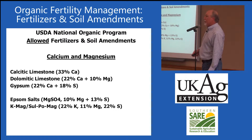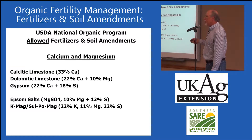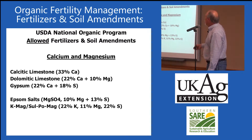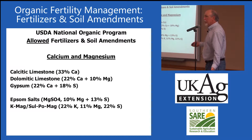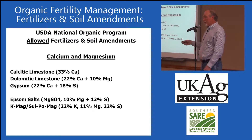For calcium and magnesium, you have a lot of tools that are allowed. You can use calcitic limestone, dolomitic limestone, and gypsum — if it's a mined source, not the wallboard kind. Epsom salts and magnesium sulfate are also options. K-Mag, also known as Soplamag, is a source of magnesium that also applies potassium.